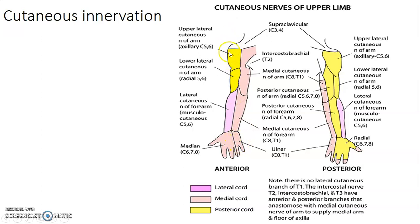C5 is at the rudimentary badge region. C6 is at the thumb. C7 is the dermatome of the longest finger. C8 is at the ring and little finger area. T1 is around the arm, and T2 is at the axilla, innervated by the intercostal brachial branch.